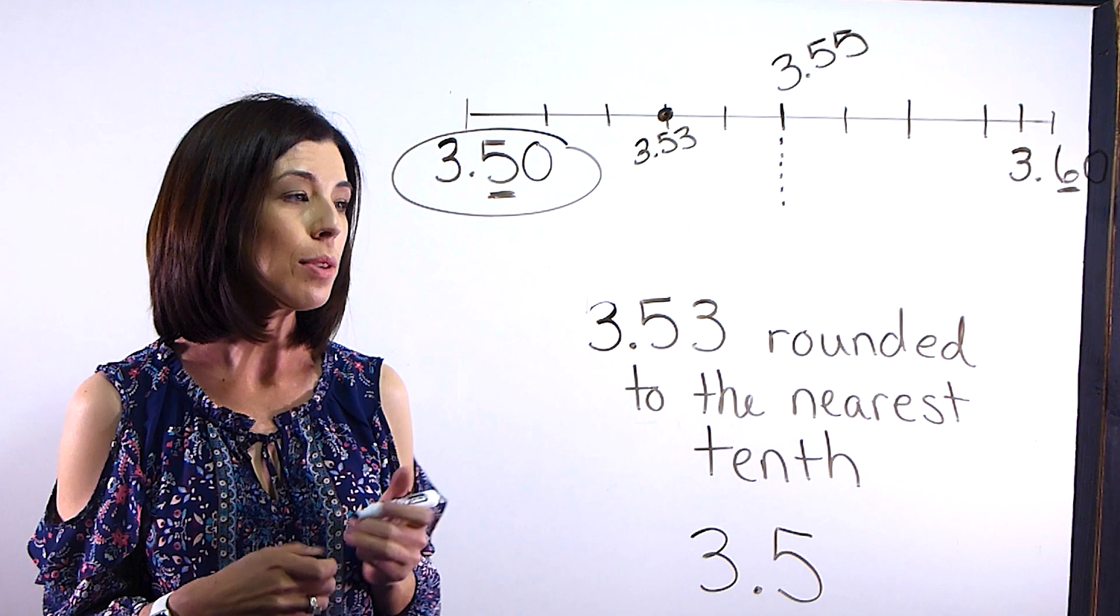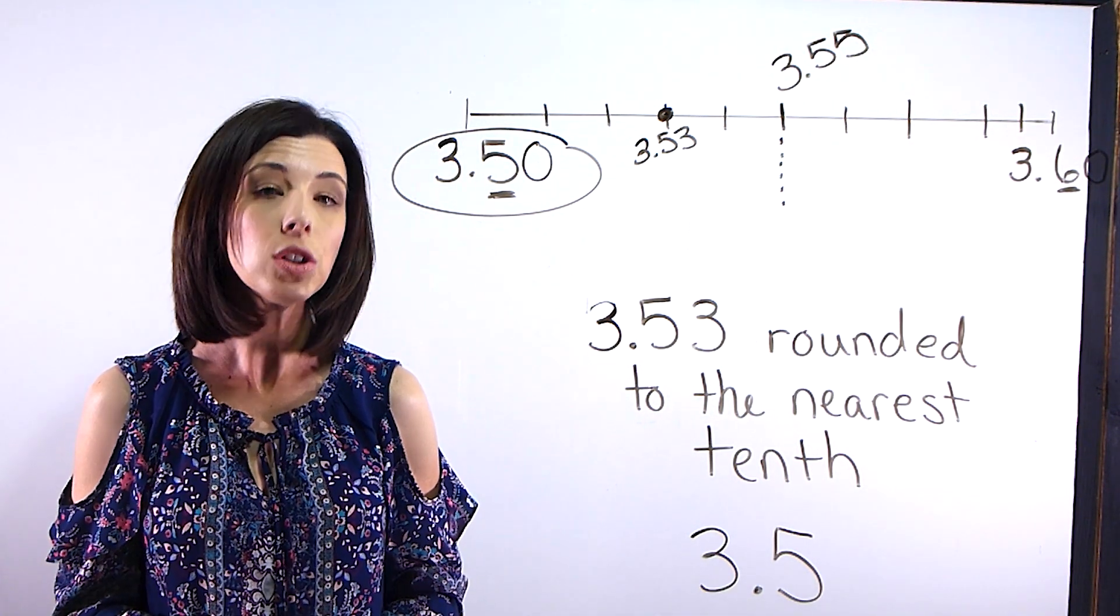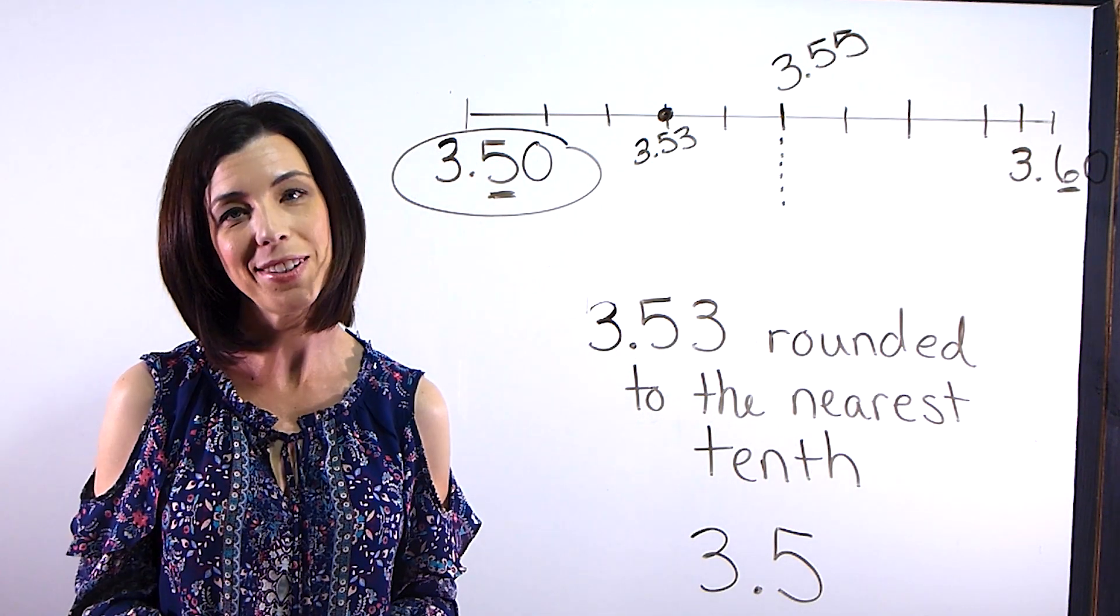So 3 and 53 hundredths rounded to the nearest tenth would be 3 and 5 tenths. And that's because it is closer to 3 and 5 tenths on the number line. I hope you found this video helpful.